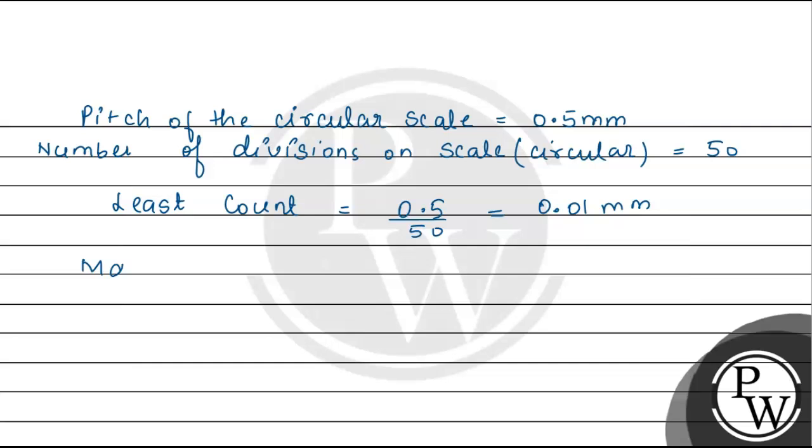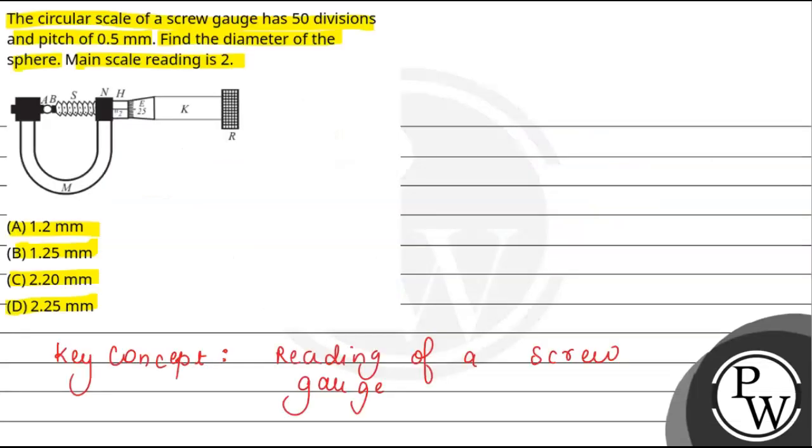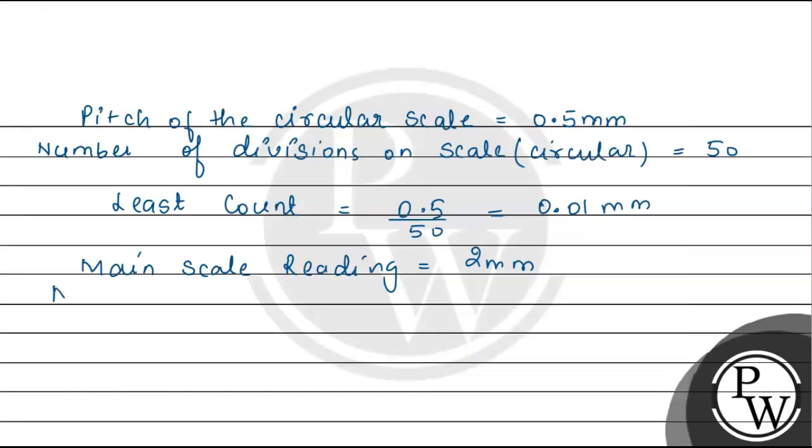Now, what is the main scale reading? Main scale reading is given as 2 mm. Marking on scale, which is in the diagram, is 25. Marking on circular scale is 25.